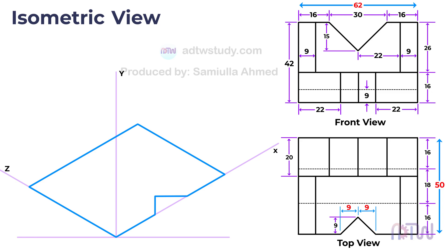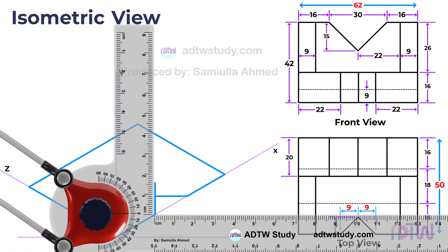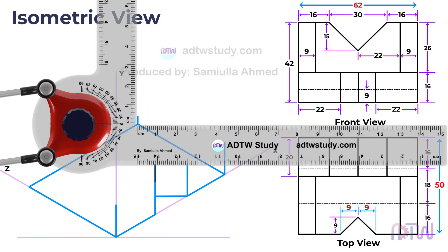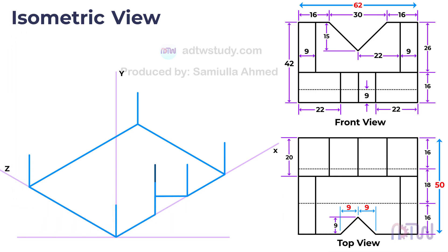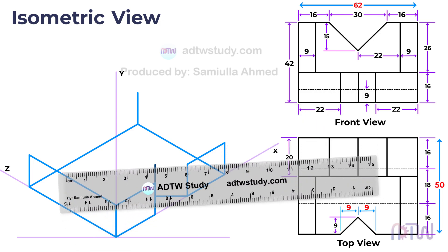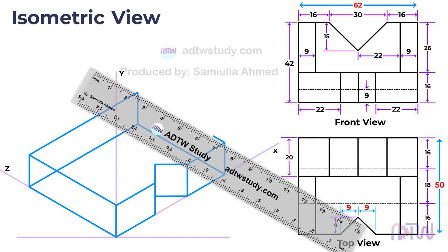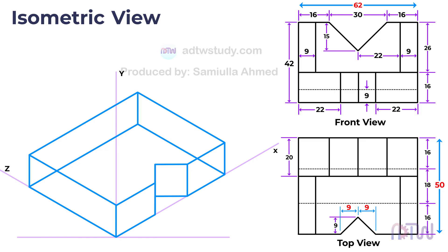To increase the thickness of the base, refer to the front view where the thickness is given as 16 millimeters. Draw vertical lines from each edge of the outline, then connect the endpoints of these vertical lines to complete the base in three-dimensional form. For clarity, remove all non-visible lines.